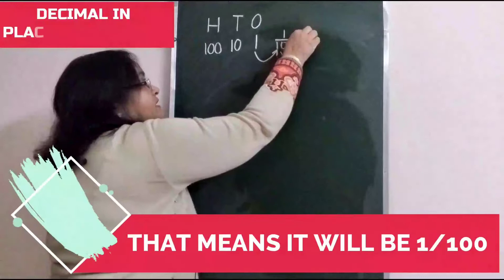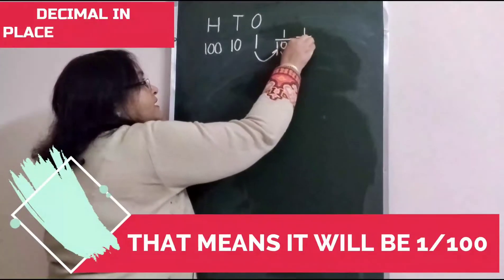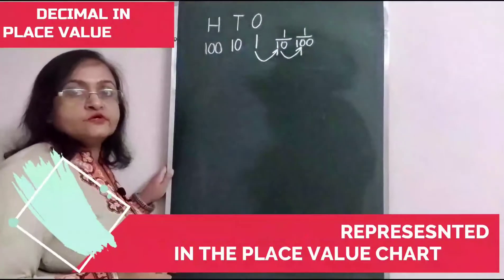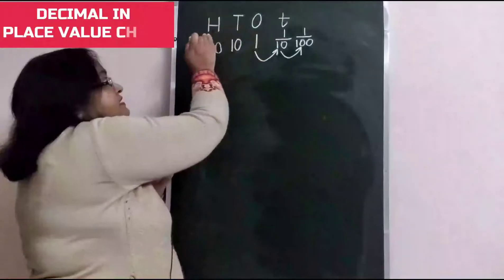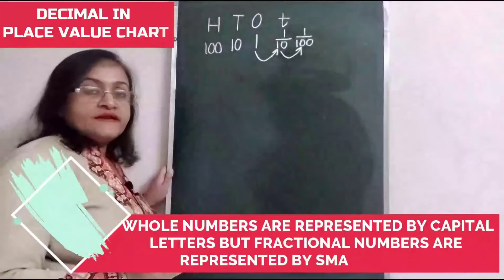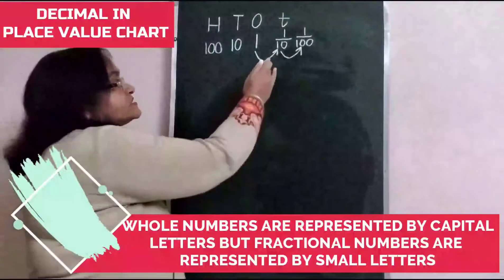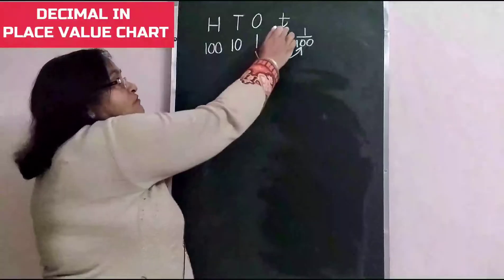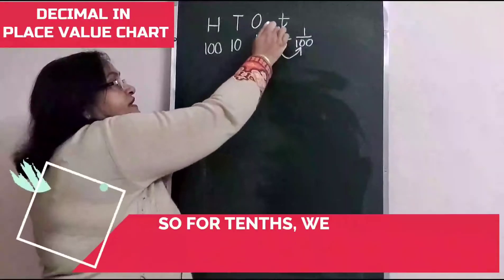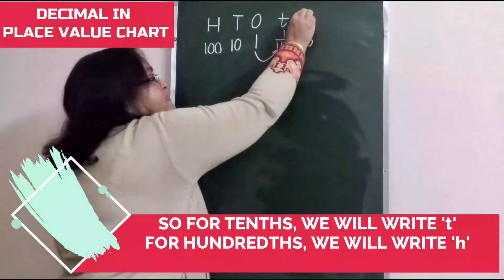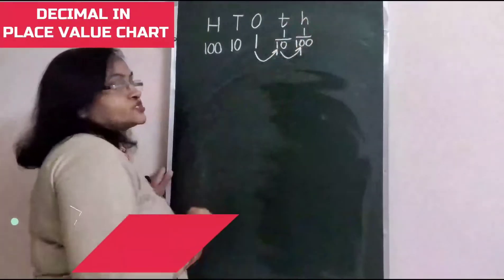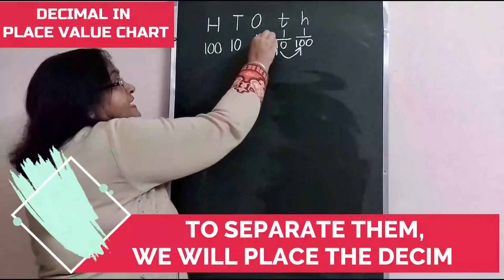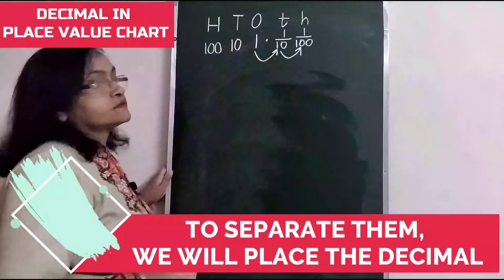How will it be represented in the place value chart? Whole numbers are represented by capital letters, but fractional numbers are represented by small letters. So, for tenths we will write small t, and for hundredths we will write small h. We will place a decimal point here to separate them.